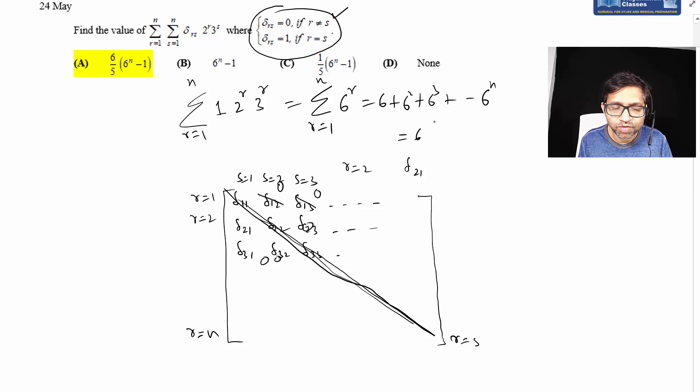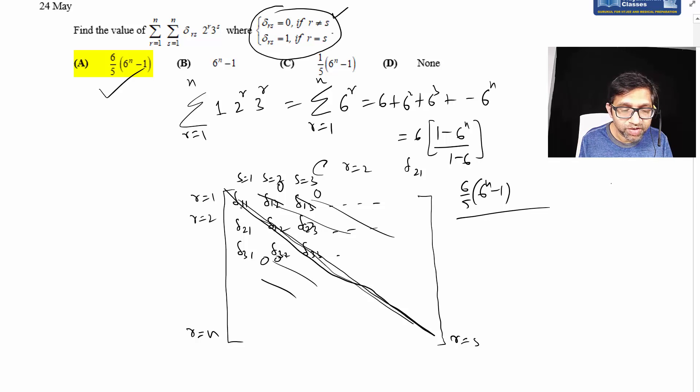The GP sum is first term 6, common ratio 6, giving us (6/5)(6^n - 1), which is the answer. The key was recognizing this grid where all elements are zero except the diagonal. When r equals s on the diagonal, we have one times 6, one times 6 squared, one times 6 cubed, so we sum 6 + 6² + 6³ + ... up to n terms.